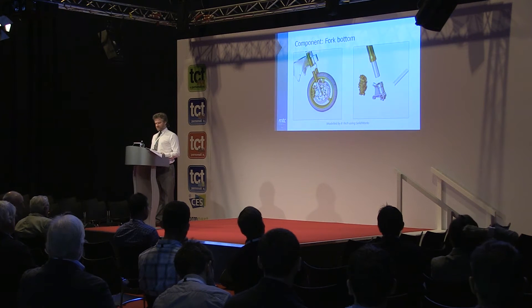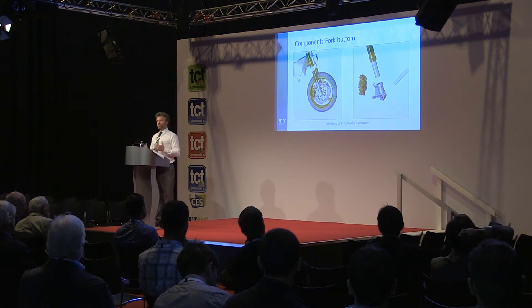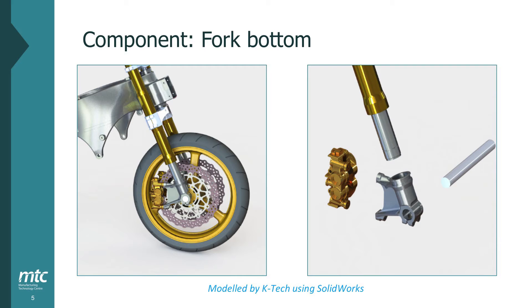In terms of its engineering function, the fork bottom's job is to hold three things together: the wheel onto the fork, the fork itself, and the brake caliper in position so it can slow down the wheel. Those are the three components creating loads on this engineering component.